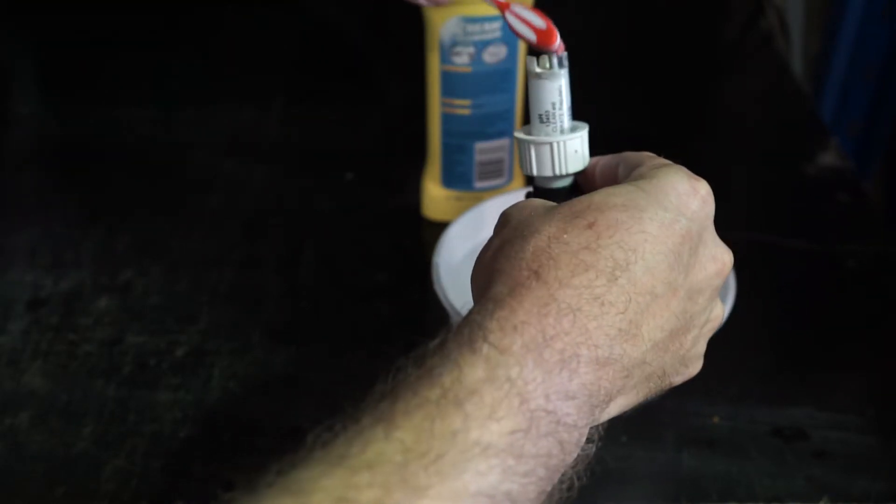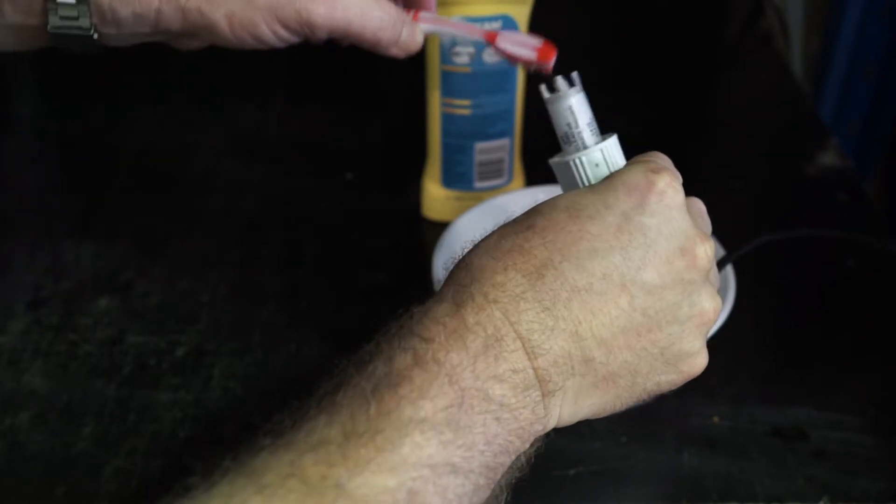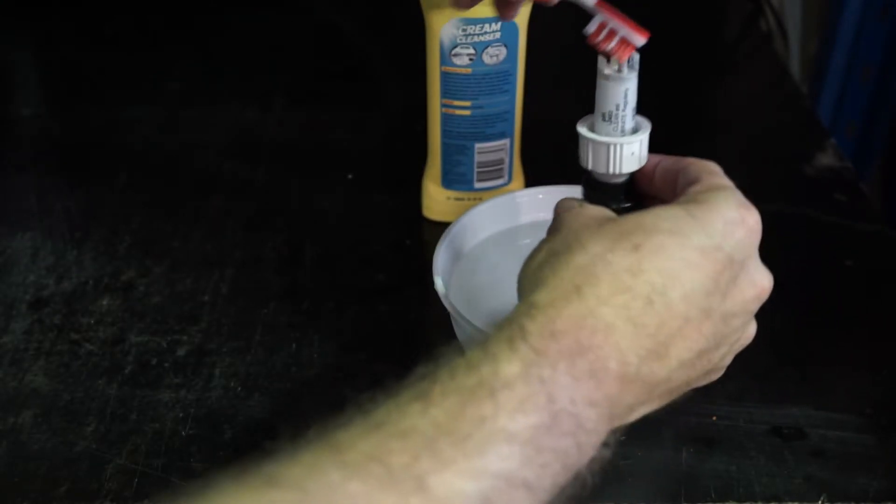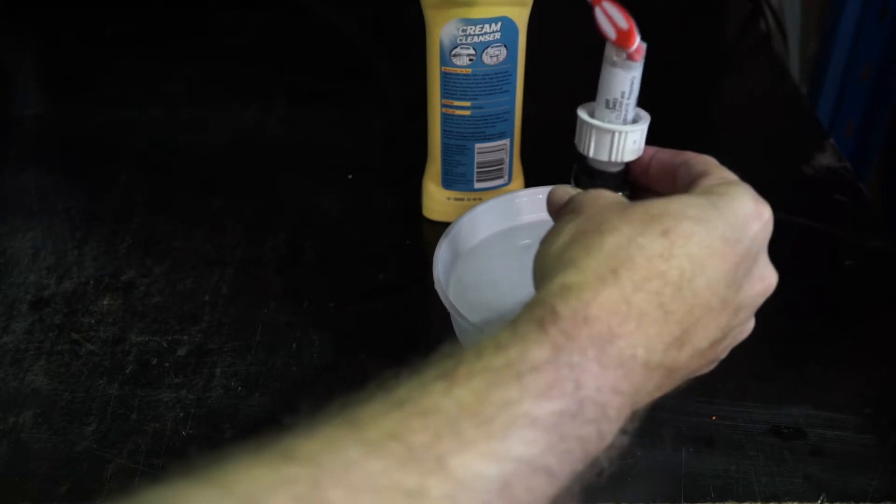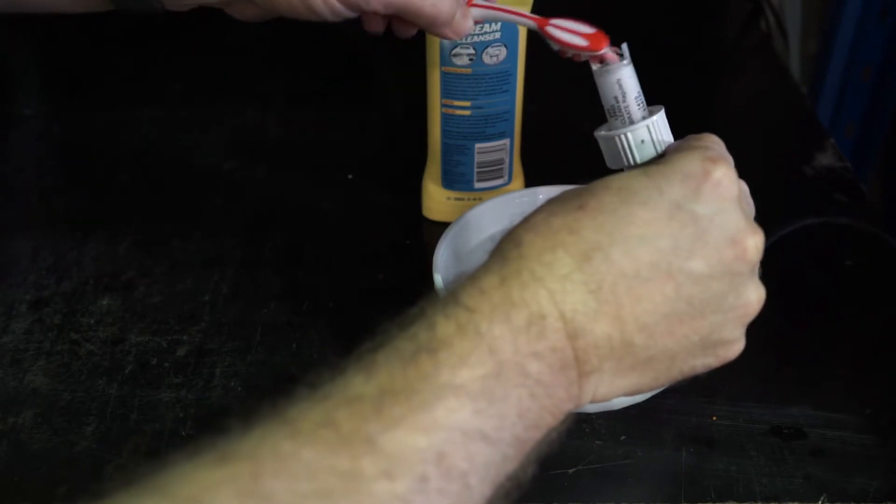We're just simply going to gently scrub at the top of the electrode, clearing away any built up debris that's coated the probe tip.